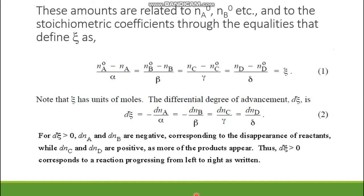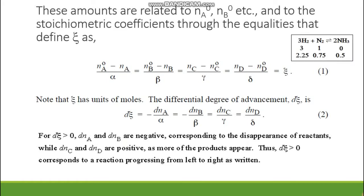Conversely, if dXi is negative (less than zero), then dN_A must be positive, meaning the amount of A is increasing and the reaction is taking place from right to left. At equilibrium, none of the species are appearing or diminishing, so dXi equals zero at equilibrium.